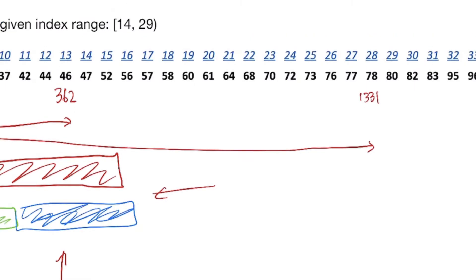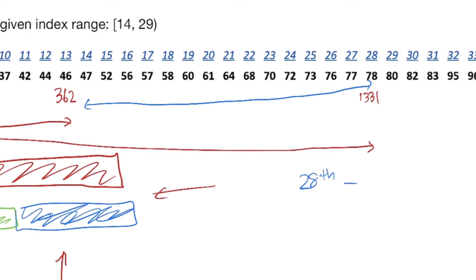We want to go from index 14 all the way to 28, and we're including 28 because the entire thing has to include 28 — we're not extending to 29, that would be counting extra. So essentially, all we have to do is create a prefix sum array that calculates the sums from the zeroth element to the ith element. When finding the sum in a given range, take the upper bounded index element in the prefix array and subtract the lower bounded index minus 1 — so we take the 28th element minus the 13th element. That gives us the range sum of 969. We can even double-check: adding 47 plus 52 plus 56 plus all the way to 78 still gives 969. So it works.